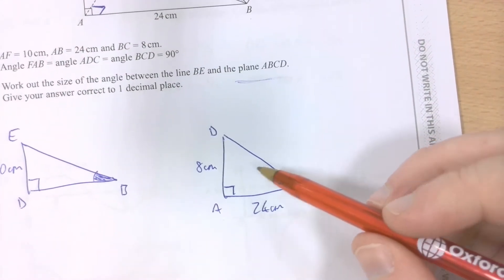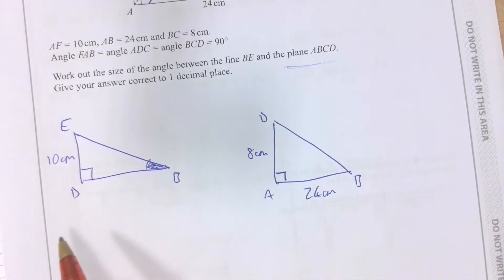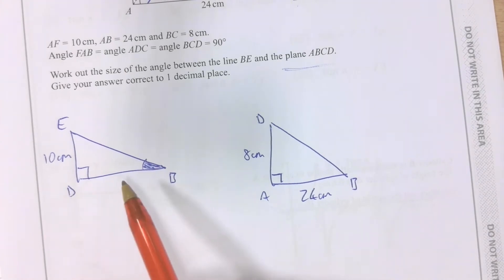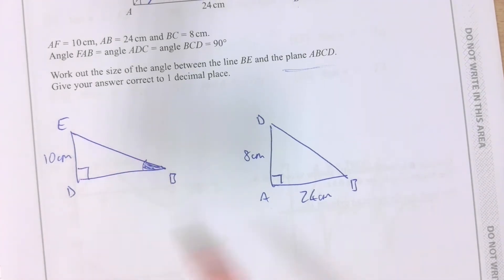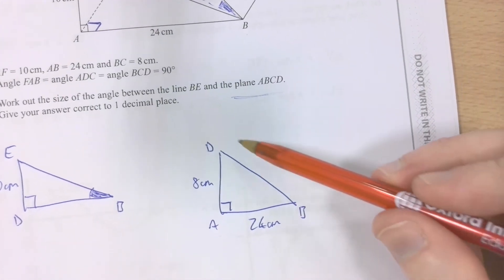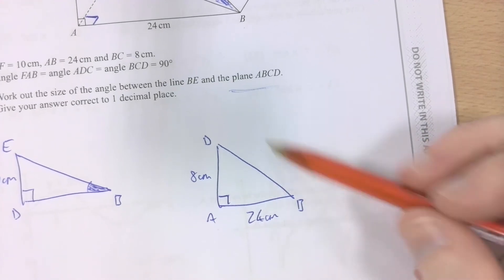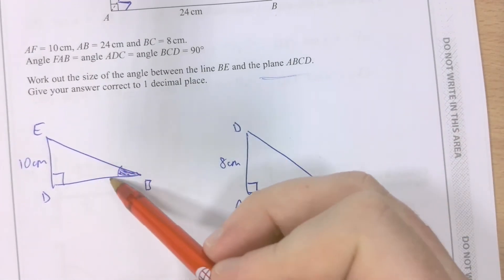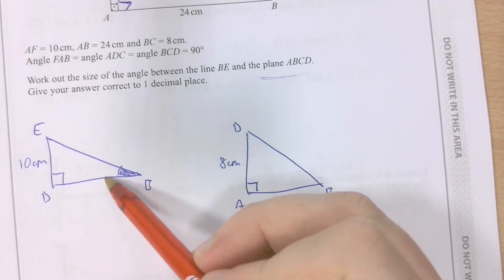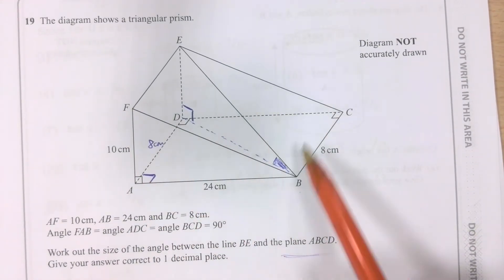So I need to work out the length DB in order to have a second length to do SOH CAH TOA trig with to work out this angle. I'm going to use Pythagoras to work out that. Because this length and this length are the same length on this triangle of the prism.